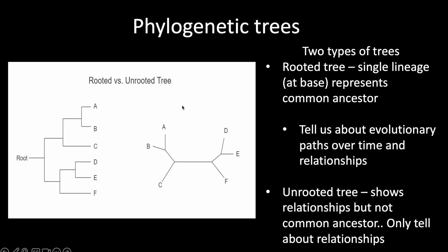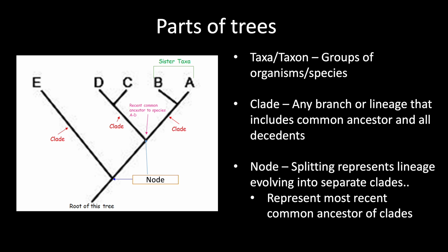Let's talk about parts of trees. We have taxa, or taxon, which are the groups of organisms or species used within our tree, shown at the tips. Sister taxa are species in the tree that are most closely related — for example, A and B are sister taxa, and D and C are sister taxa. E does not have a sister taxon and is equally related to all the other species shown.